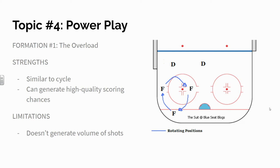Number one is called the overload, and it uses the same cycling principle that we learned about last week. Three forwards: one on the half wall, one in between the hash marks, and one down low — trading positions in a clockwise fashion to generate lanes for shots and for passes across the circle.